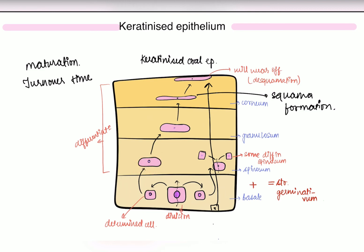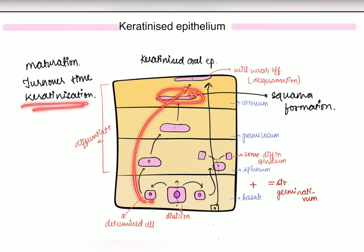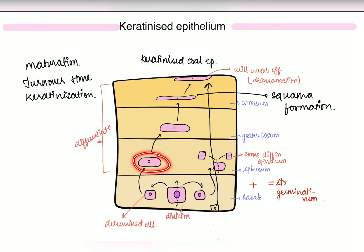Now regarding keratinization: the period from when the cell is determined until it reaches the squama stage is called keratinization. The maturing cells produce growth inhibitors which prevent them from further division. There are also factors — EGF and TGF — that promote cell proliferation and differentiation.